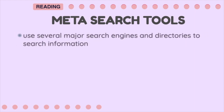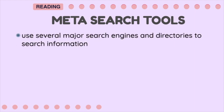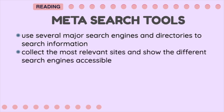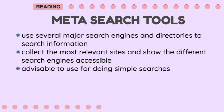Meta search tools use several major search engines and directories to search for information. When you request for information, they collect the most relevant sites and show the different search engines accessible. One has access to numerous engines; however, one may not be able to maximize the use of one search engine. Thus, they are advisable to use for doing simple searches.